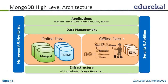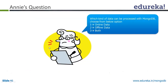Any questions? This is the high-level architecture — how it looks like. You can see it can be used for online data. Typically, you can interface your applications with MongoDB, and this provides very good scalability, speed, availability, and so on.